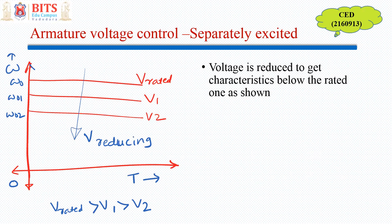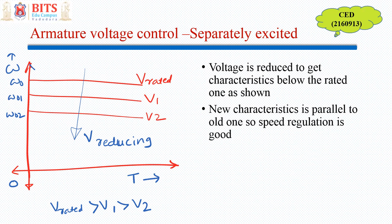So the good part of it is that this characteristic is still parallel to the original line or having very less slope. So the speed regulation is good. It is still good for the constant speed application. But now with reduced voltage you are able to run at the new required speed.